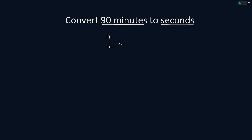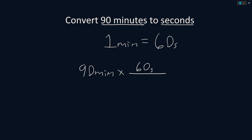Convert 90 minutes to seconds. We know that 1 minute is equal to 60 seconds. So to convert our units, we start with the units that we were given of 90 minutes and multiply by a fraction that cancels out the units that we were given. We will put seconds on top and minutes on the bottom. Solving this, we get that 90 minutes is equal to 5,400 seconds.